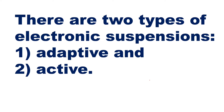These actuators work on your electric signal and are activated with the help of that signal. There are two types of electronic suspension: the first type is adaptive and the second is active. In the adaptive type, we sense the road condition and wheel status and accordingly adjust the suspension system. In the active type, we concentrate on the height of the vehicle, adjusting it to improve the suspension of the vehicle.